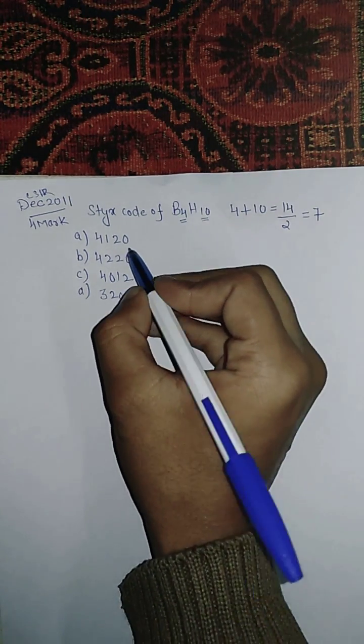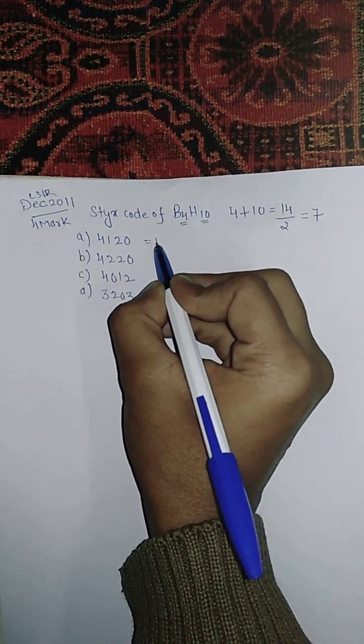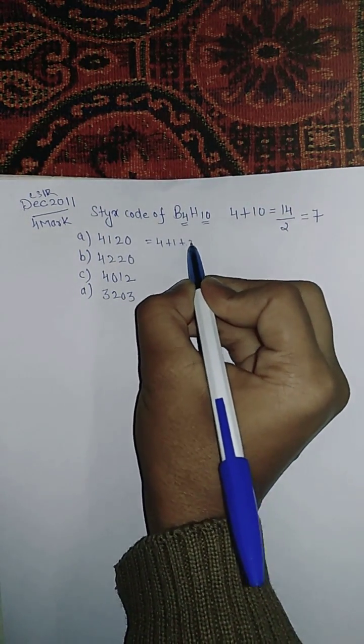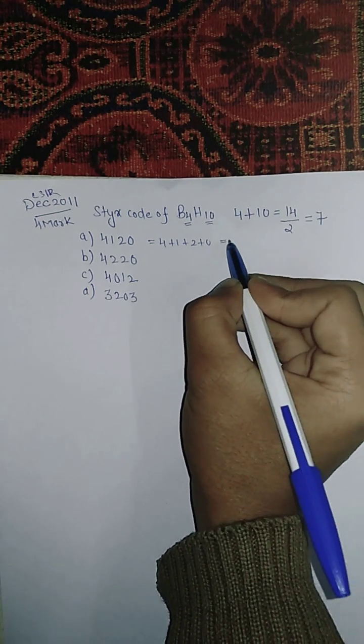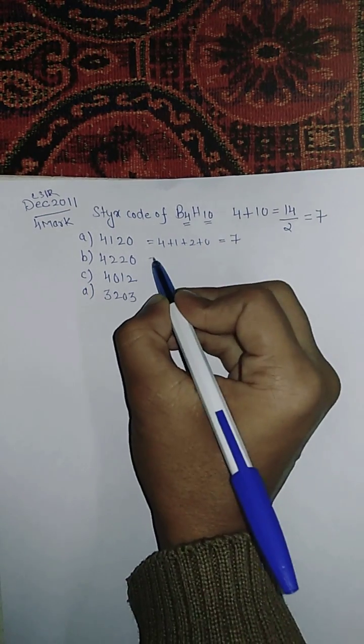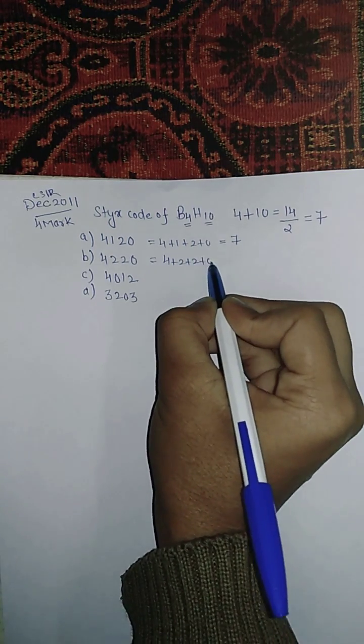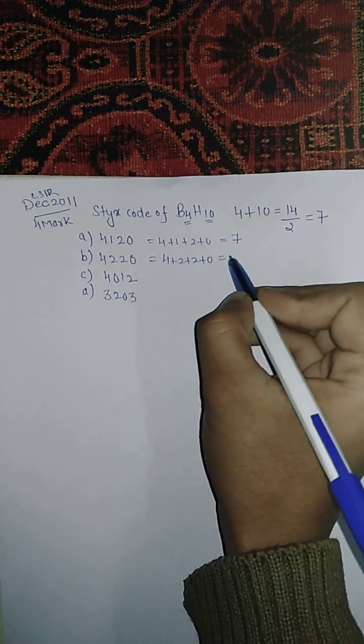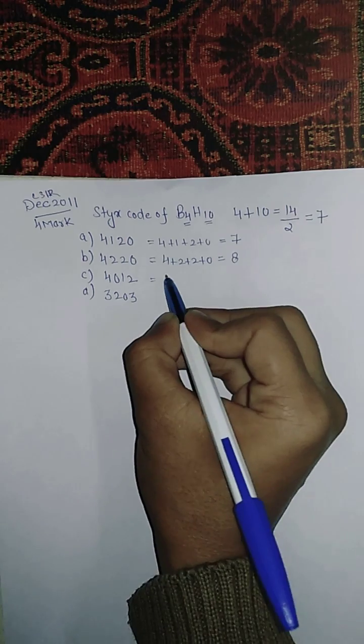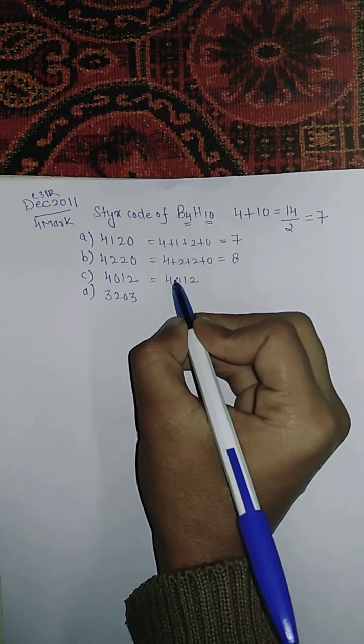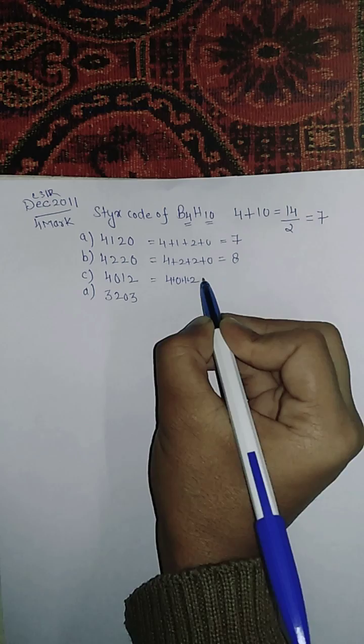4+2+2+0 came out to be 8. 4+0+1+2 came out to be 7, and 3+2+0+3 came out to be 8. So there are two options with 7, that is A and C.